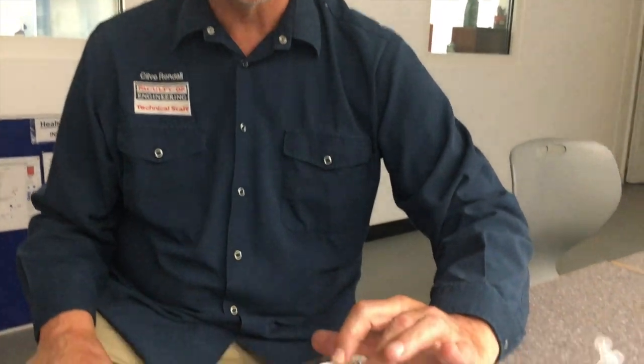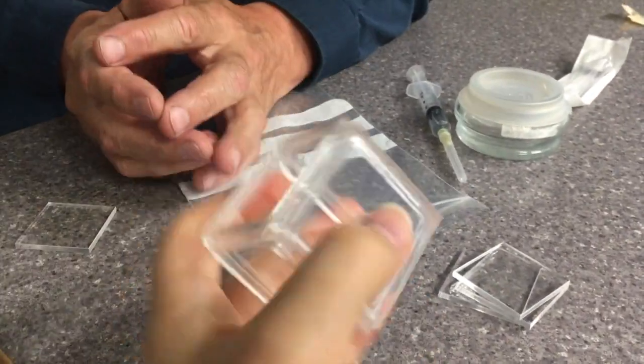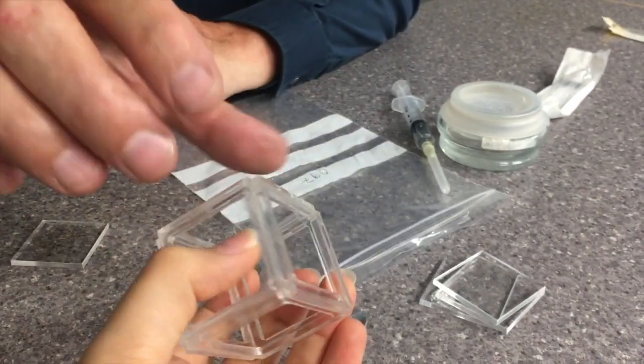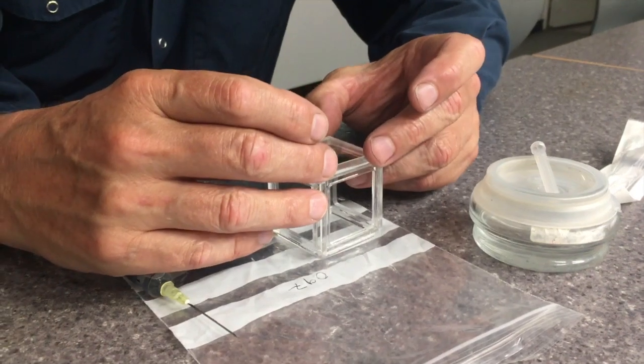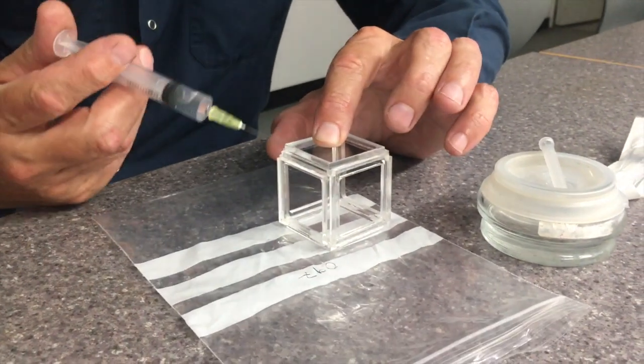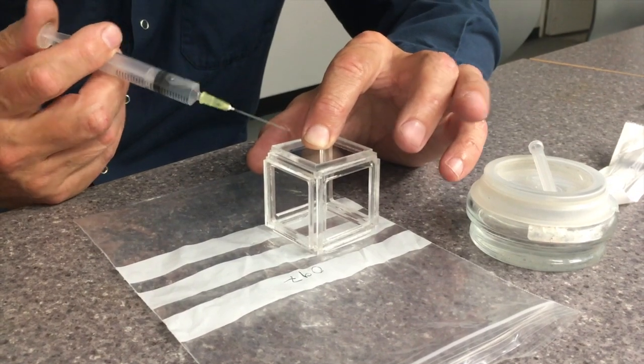What happens is the chloroform melts the Perspex just a little bit, and then reforms again when it evaporates. Sealed. What we do next is put on those windows, put on top there, we work all around. So this is basically gluing it together.